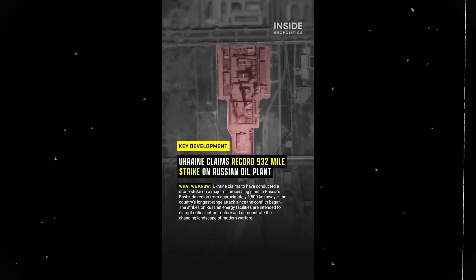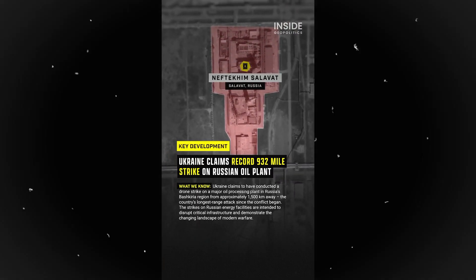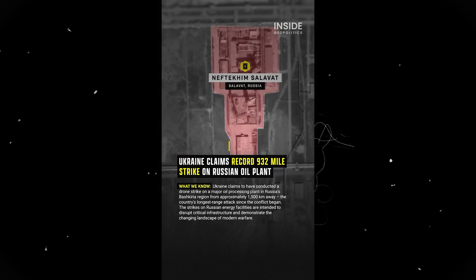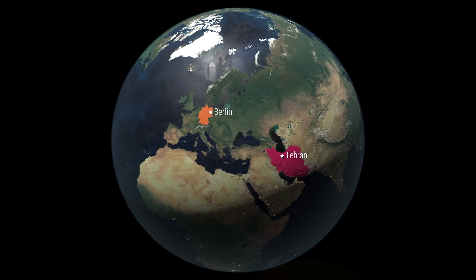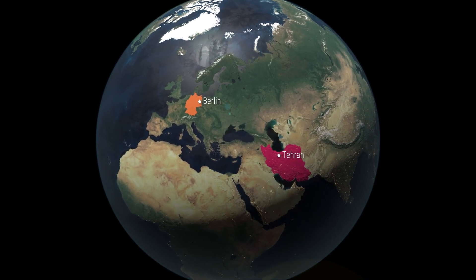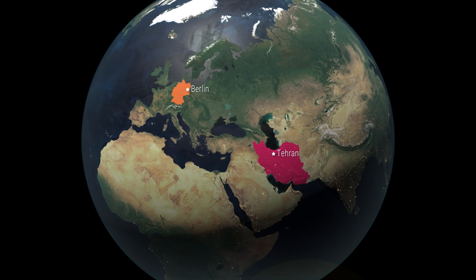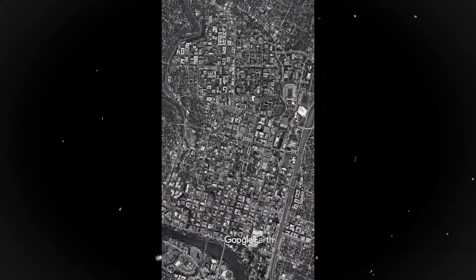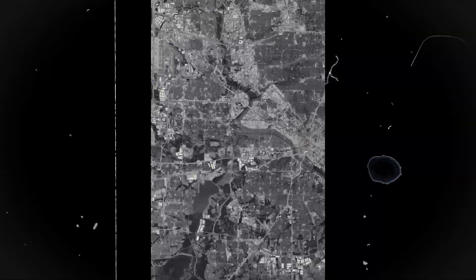If you've used Julius before, you would have noticed that you cannot really zoom in to see buildings. There are two methods I have discovered that you can use to do this. There are probably other better methods out there, so if you know any, please put them in the comment section.